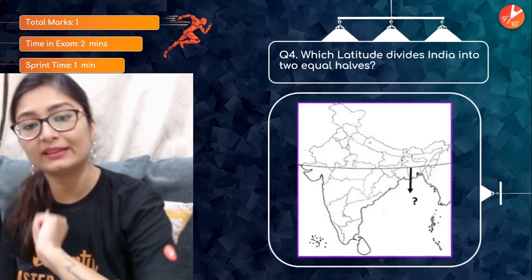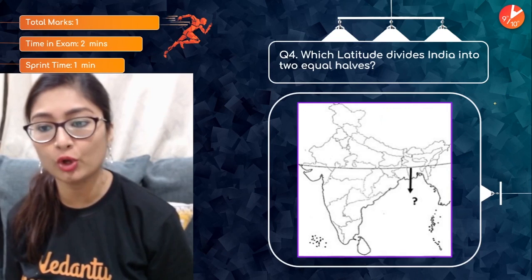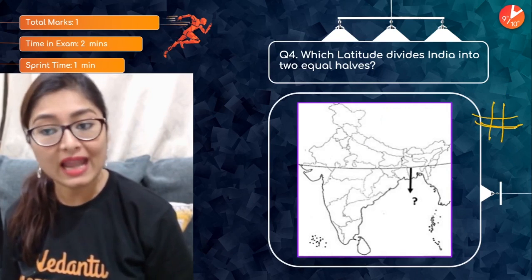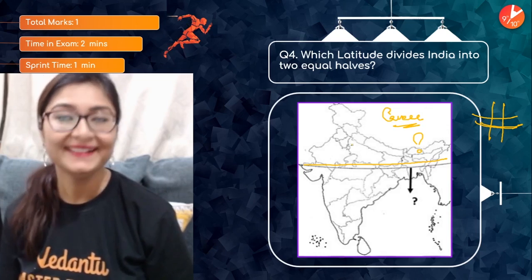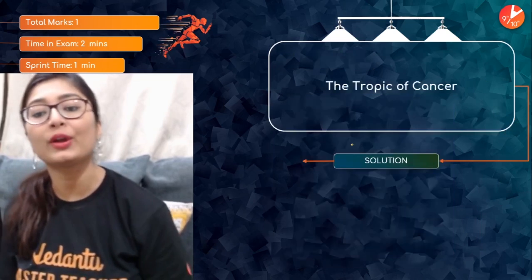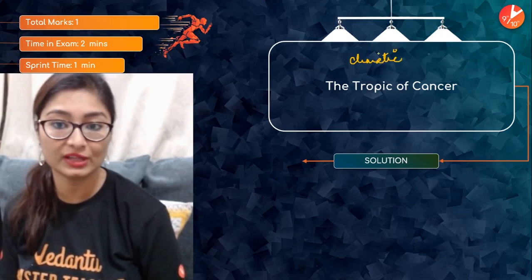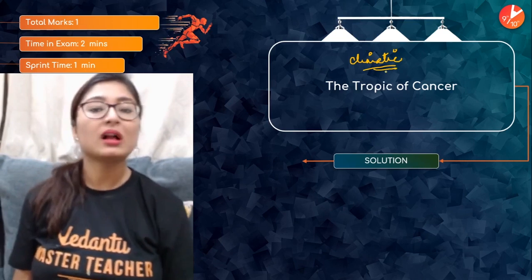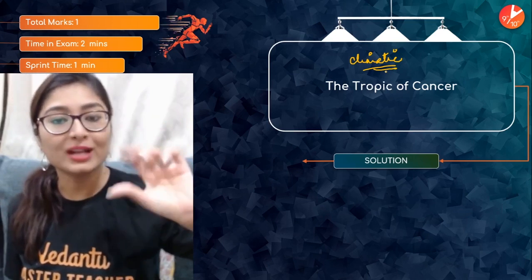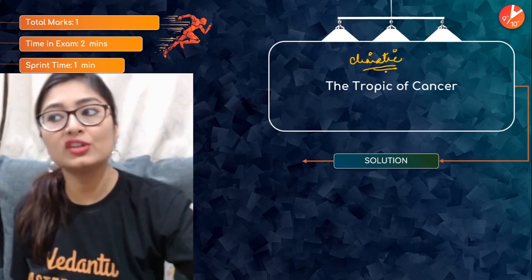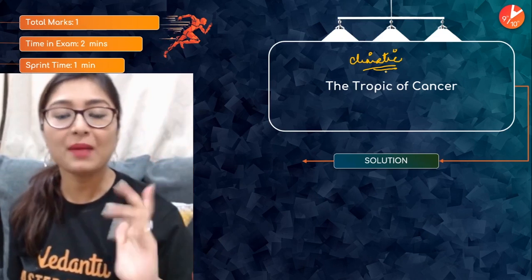Question 4: which latitude divides India into two equal halves? Remember, longitudes run vertically and latitudes run horizontally. The answer is the Tropic of Cancer. It divides India into two equal halves and is responsible for climatic variation — the north becomes colder while the southern peninsular part, being closer to the equator and sea, remains more moderate.